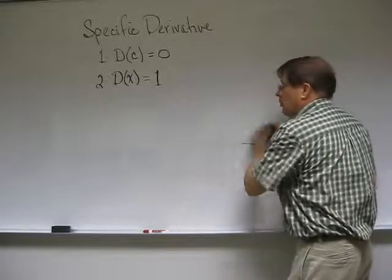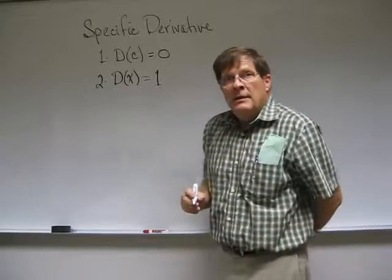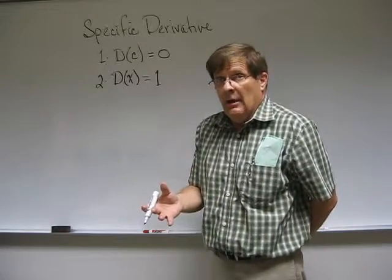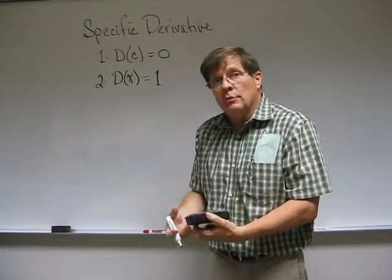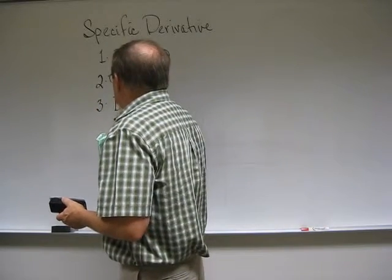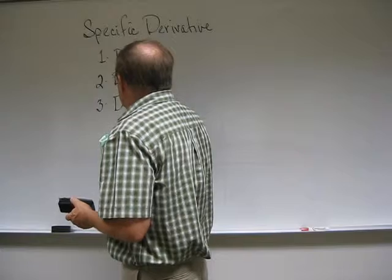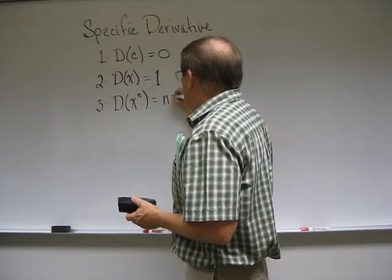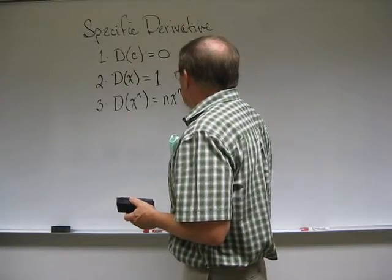Okay, 4 more rules to go. The next rule is one that you need to take on faith for right now. Remember the derivative tells you the slope of the curve at any point. But the next rule says that the derivative of x raised to any number is equal to n x to the n minus 1.